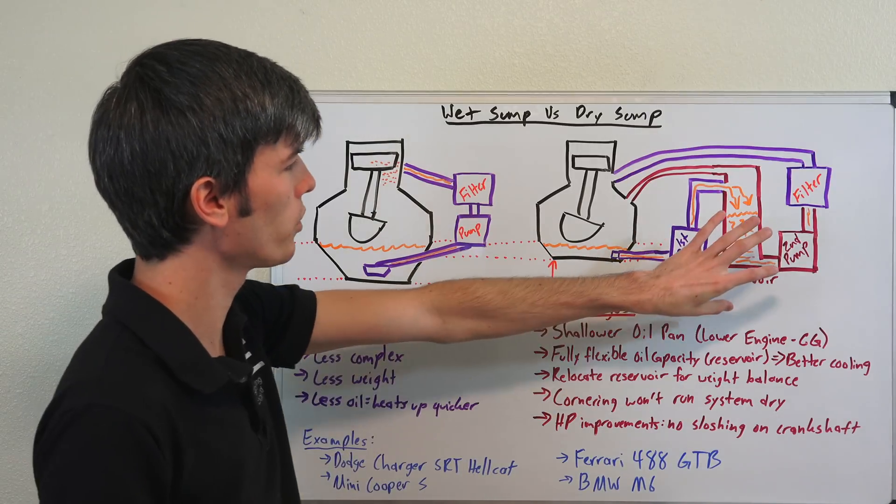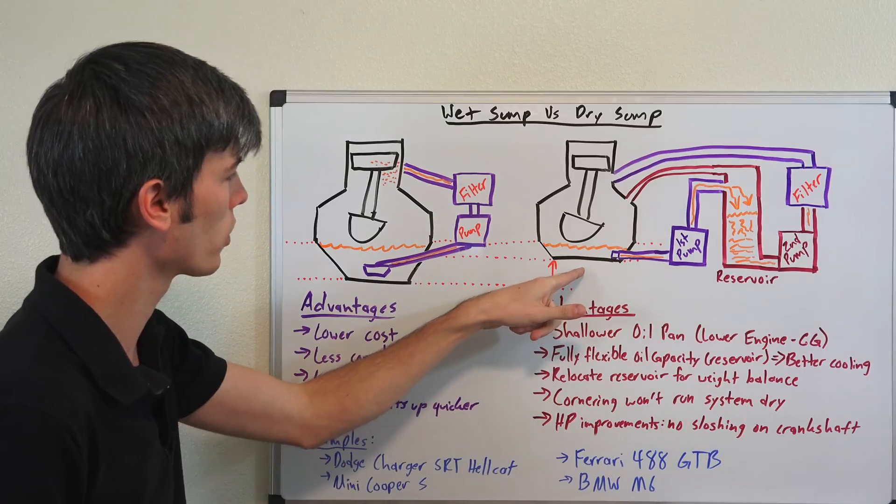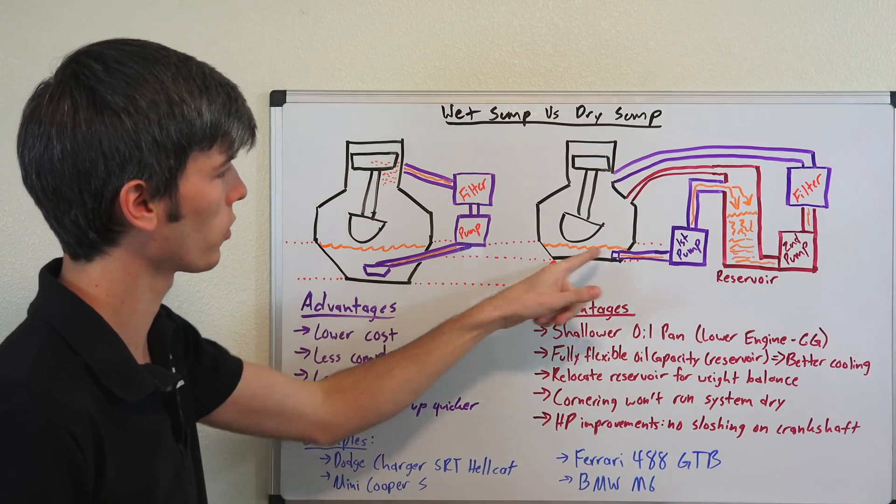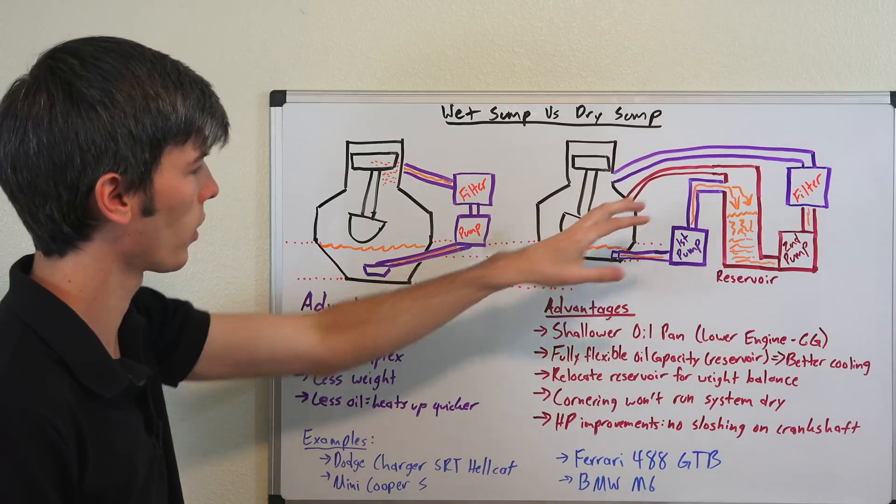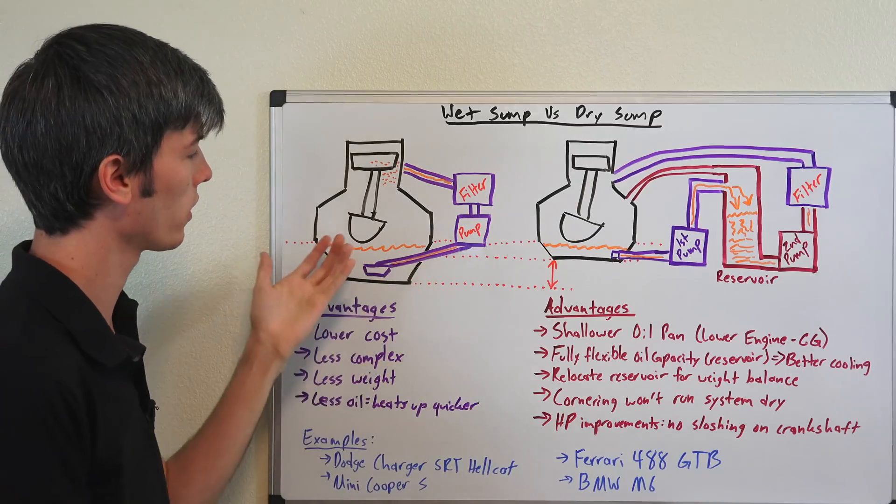So why would you add in this reservoir right here? Well, one of the reasons you do this is because you can use a shallower oil pan as you can see right here. Because this reservoir is located externally somewhere else, you don't have to have that deep oil pan in order to accumulate all that oil and use however much oil you have in your engine.